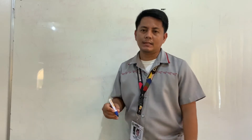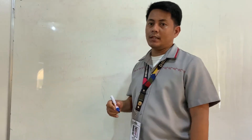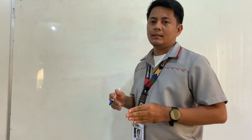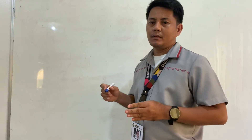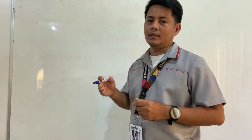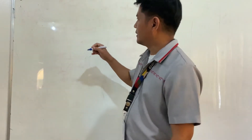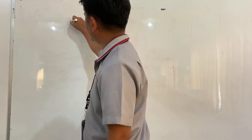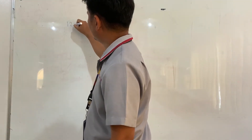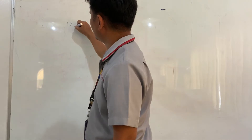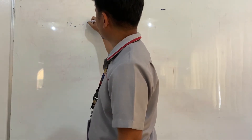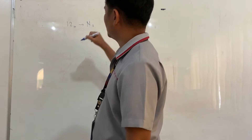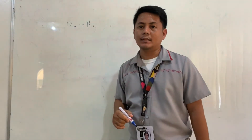But first, let us demonstrate the conversion of decimal to binary using the long method. So let's say, for example, we are going to convert 12 in decimal into its binary equivalent.